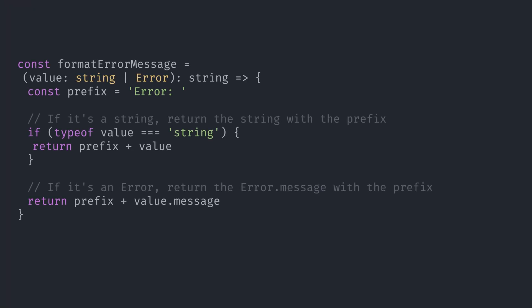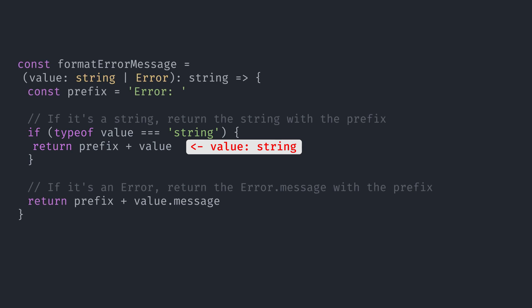So let's use it in our function. What's happening here is that the typeof value equals string statement is acting as a type guard for a string. TypeScript knows that the only way for the code inside that if statement to run is if value is a string, so it narrows the type down to string inside the if block. Since we're returning something, value can't be a string after that if statement, so the only type left is error.